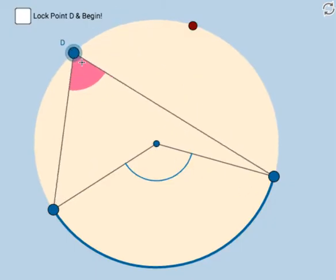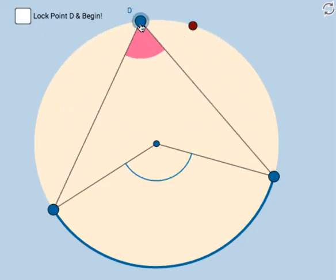Now, does that pink angle there, does that inscribed angle look bigger or smaller than the blue angle in the center? Does that pink angle look bigger or smaller? If you said smaller, you're absolutely correct. The question is, how much smaller is it?